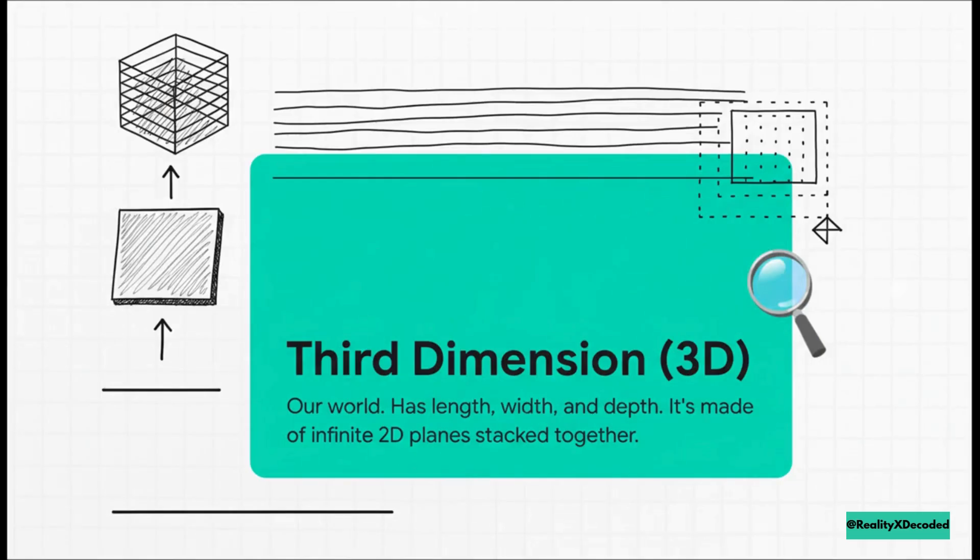And this, well, this is where we live. If you take an infinite number of those 2D planes, those sheets of paper, and stack them on top of each other, you finally get depth. You get the third dimension. Length, width, and height. You see the pattern, right? Each new dimension is built by stacking an infinite number of the one that came before it.